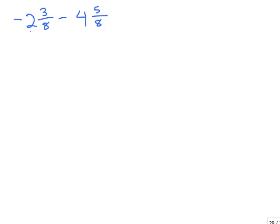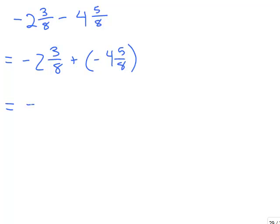This next problem looks similar, but notice we have a negative 2 and 3 eighths. Try this problem on your own. The first thing is we have a subtraction, so we change that to adding the opposite, giving us negative 2 and 3 eighths plus negative 4 and 5 eighths. Now I see I'm adding two negative numbers, so my answer will be negative.